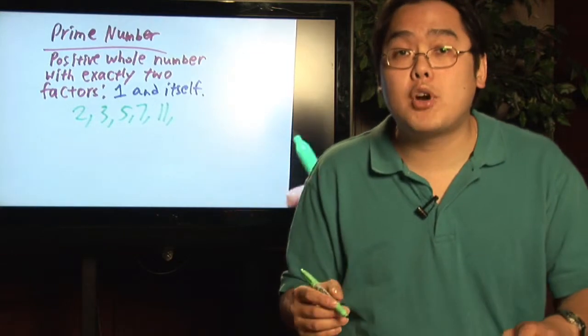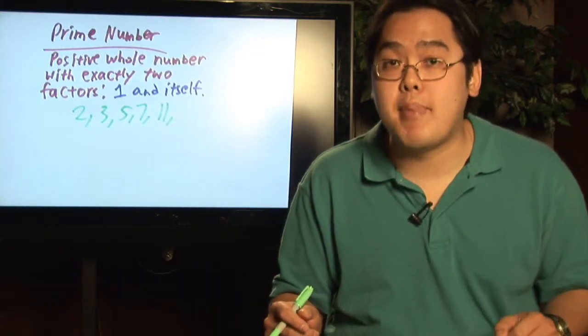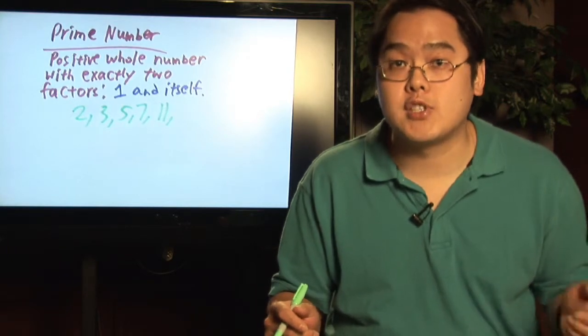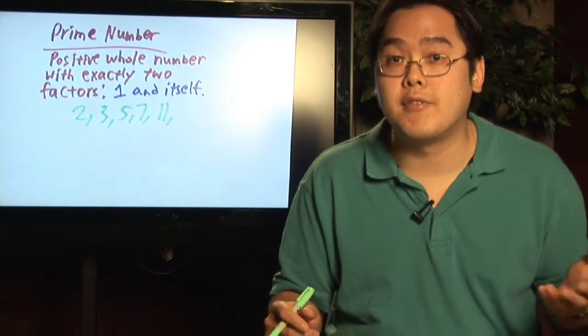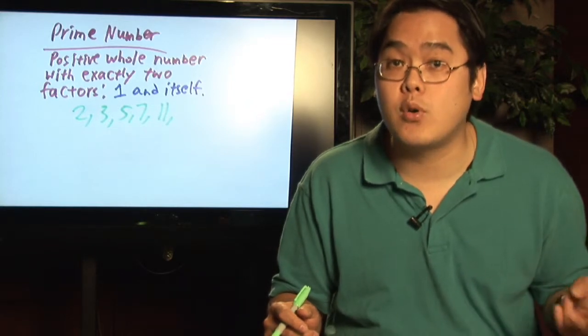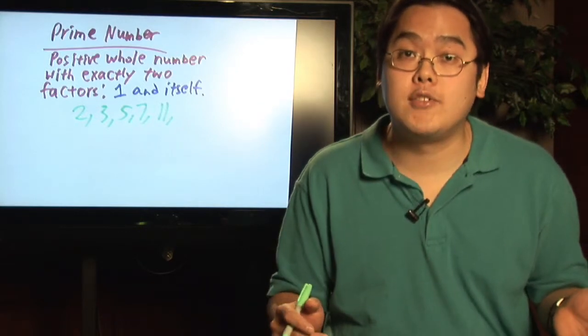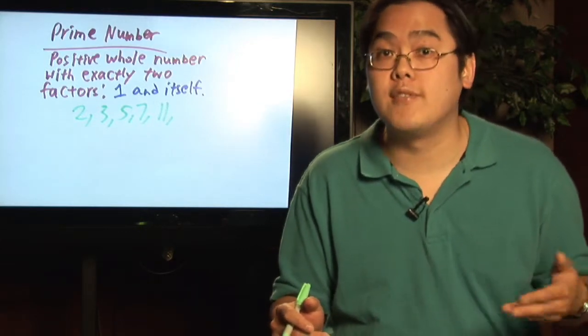Now, if a number has factors other than one and itself, it's called a composite number. Those numbers obviously are not prime. For example, the number four is not prime because the factors of four, besides one and four, are two—two goes into four. Also 12: besides one and 12, you have two, six, three, and four.